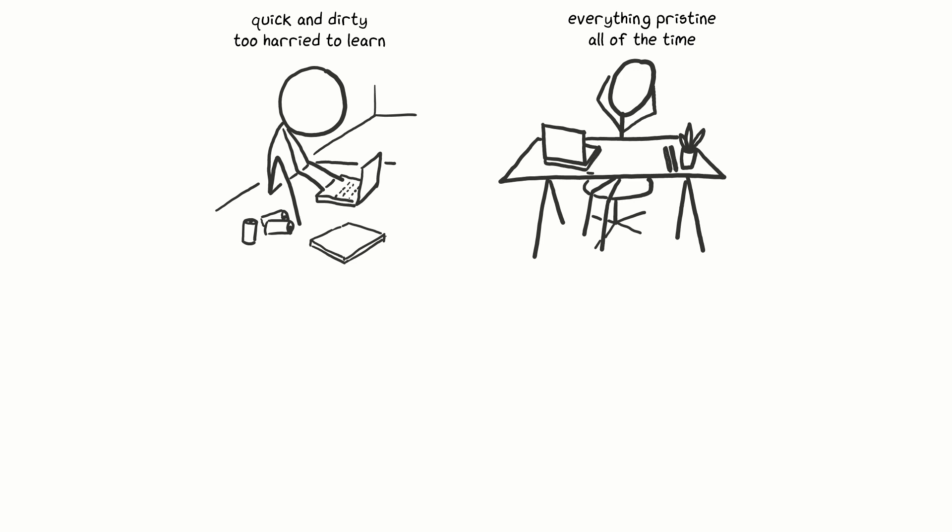Next, there's Fastidious Francis. Francis is one of those people who goes in for desk-tidying stationery organisers and has an Instagram-ready array of succulents, and all their pens are nicely lined up. Francis spends so much time making things tidy that there's not enough time to get deep into work, and so they end up not achieving all that much.